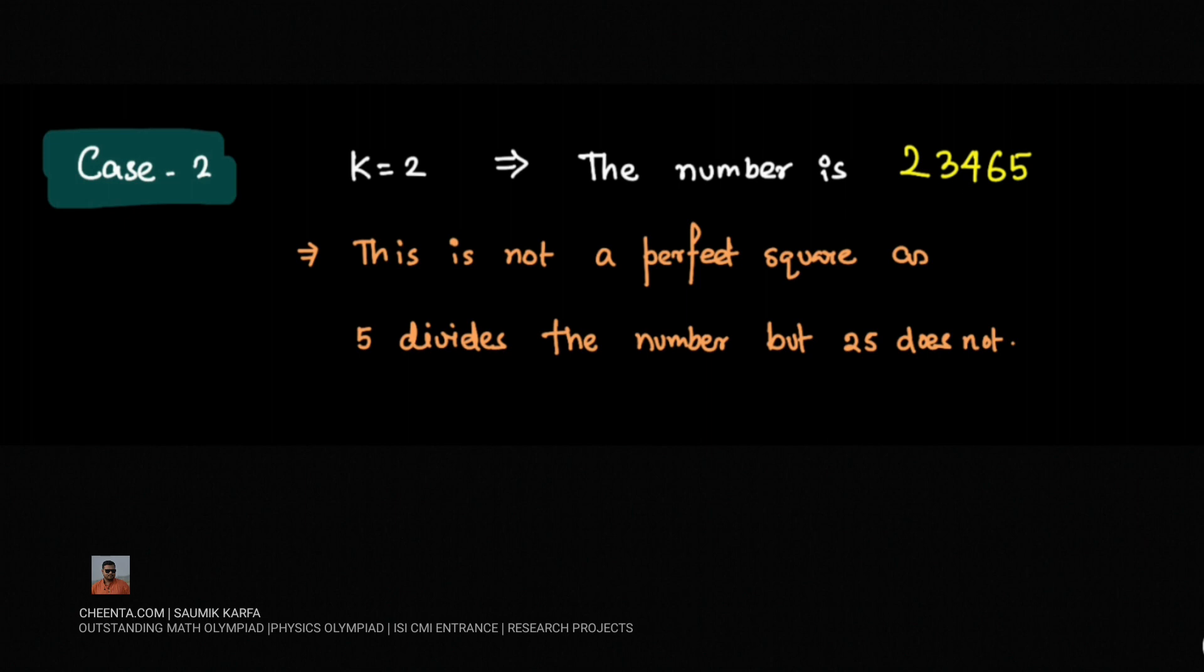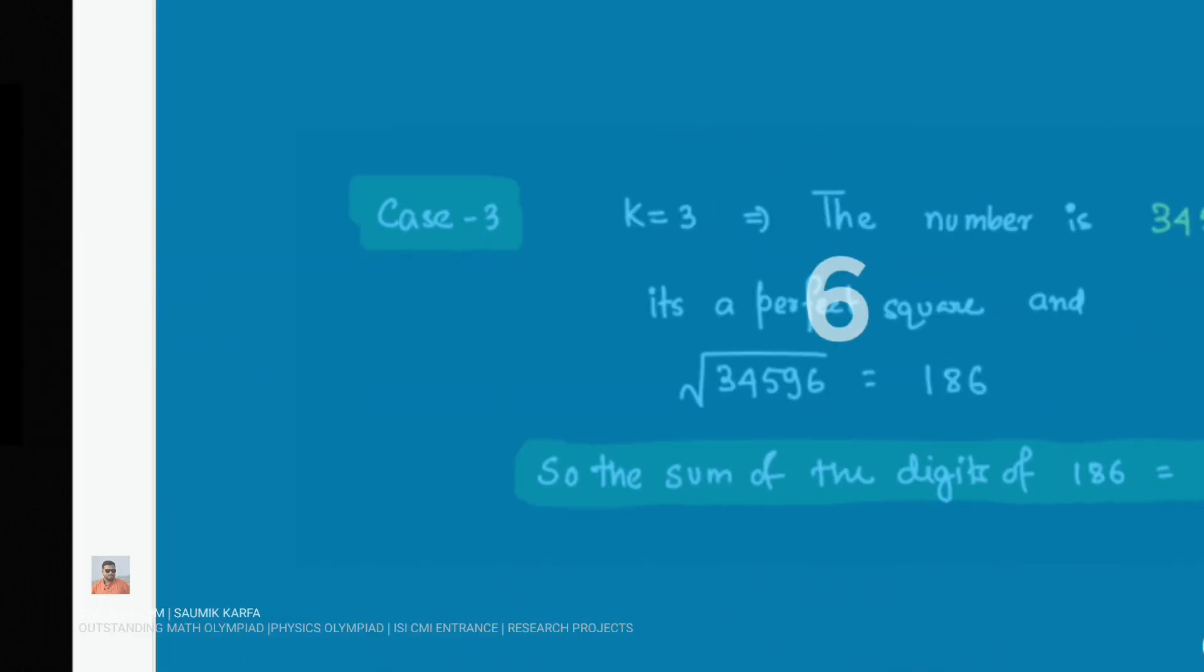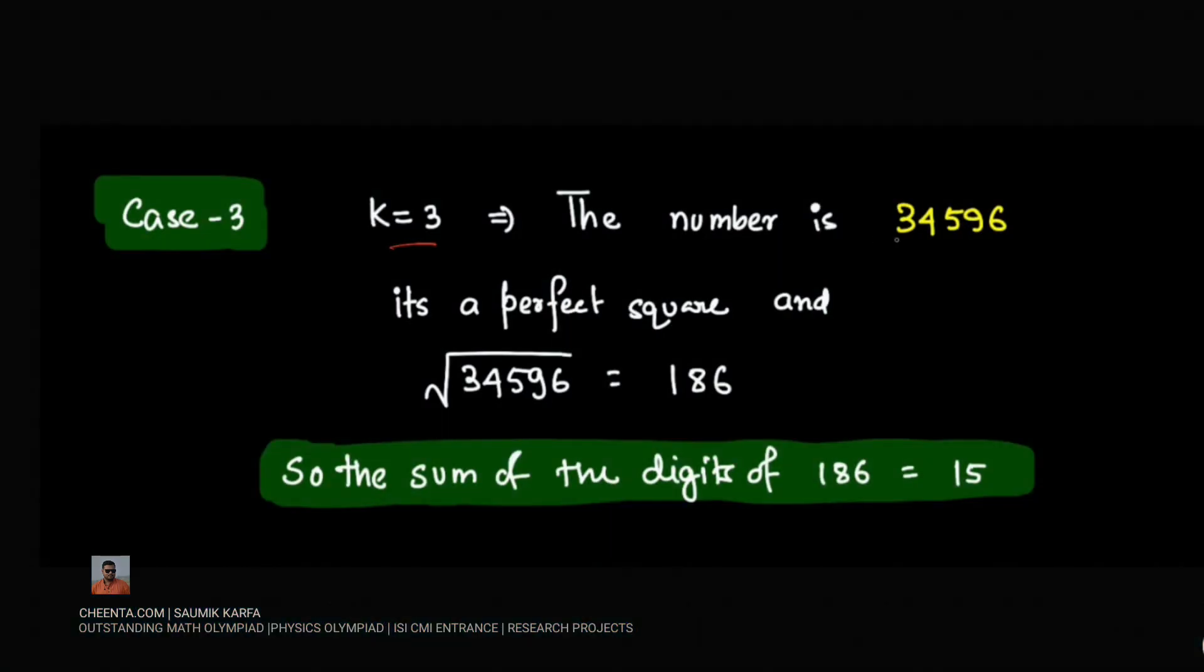That gives us the idea that the last and remaining case, k equals 3, must be the correct case. So for k equals 3, the number becomes 34596, which you can check is a perfect square and is the square of 186. So the sum of the digits of 186 would be 15, and that's our final answer.